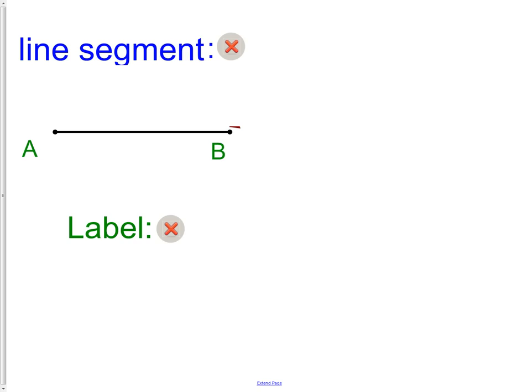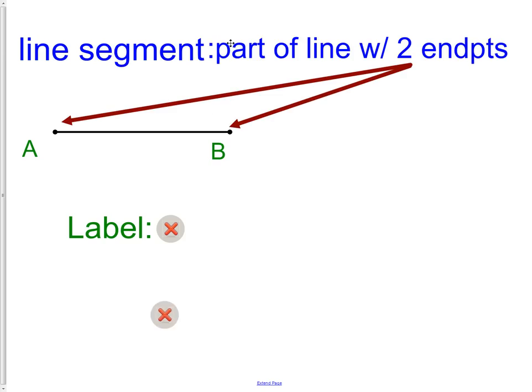The first thing we need to understand is, what is a line segment? A line segment is part of a line. It's a segment. It is a short portion. A line goes forever and ever. A line segment is part of a line with two endpoints.